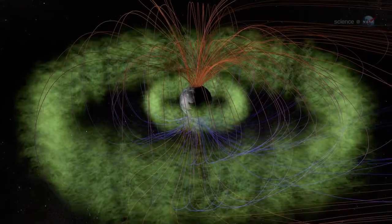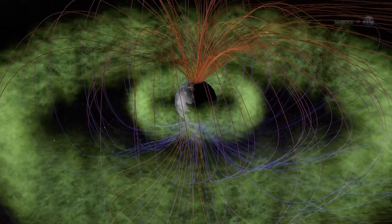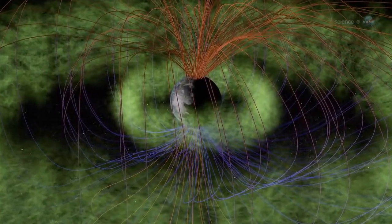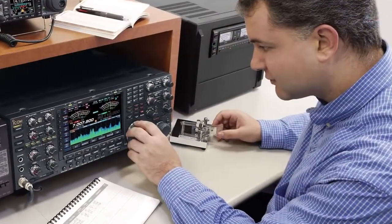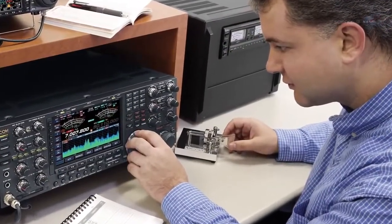Chorus is an electromagnetic phenomenon caused by plasma waves in Earth's radiation belts. For years, HAM radio operators on Earth have been listening to them from afar.